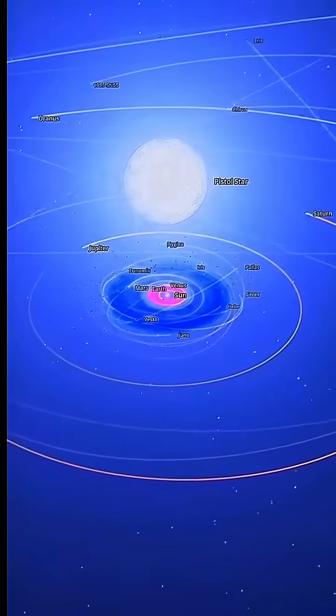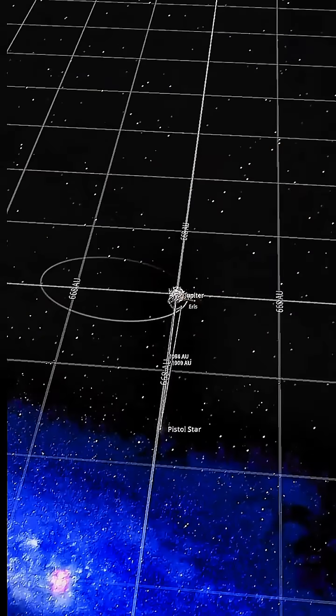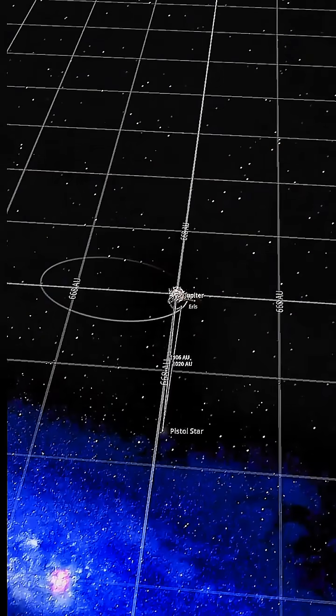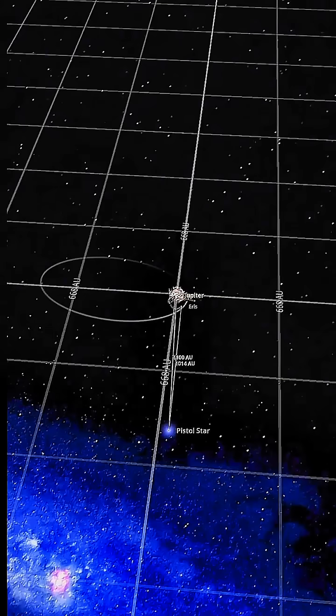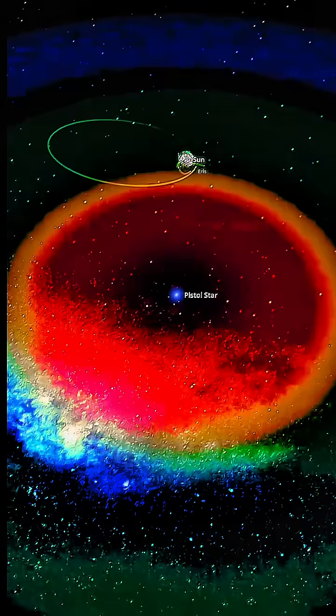What if our solar system orbited in the Pistol Star's Goldilocks zone? Let's place the Pistol Star, a blue hypergiant 1.7 million times brighter than our sun, 1,100 astronomical units from our solar system. At this incredible distance, our entire solar system now sits in this stellar giant's Goldilocks zone.